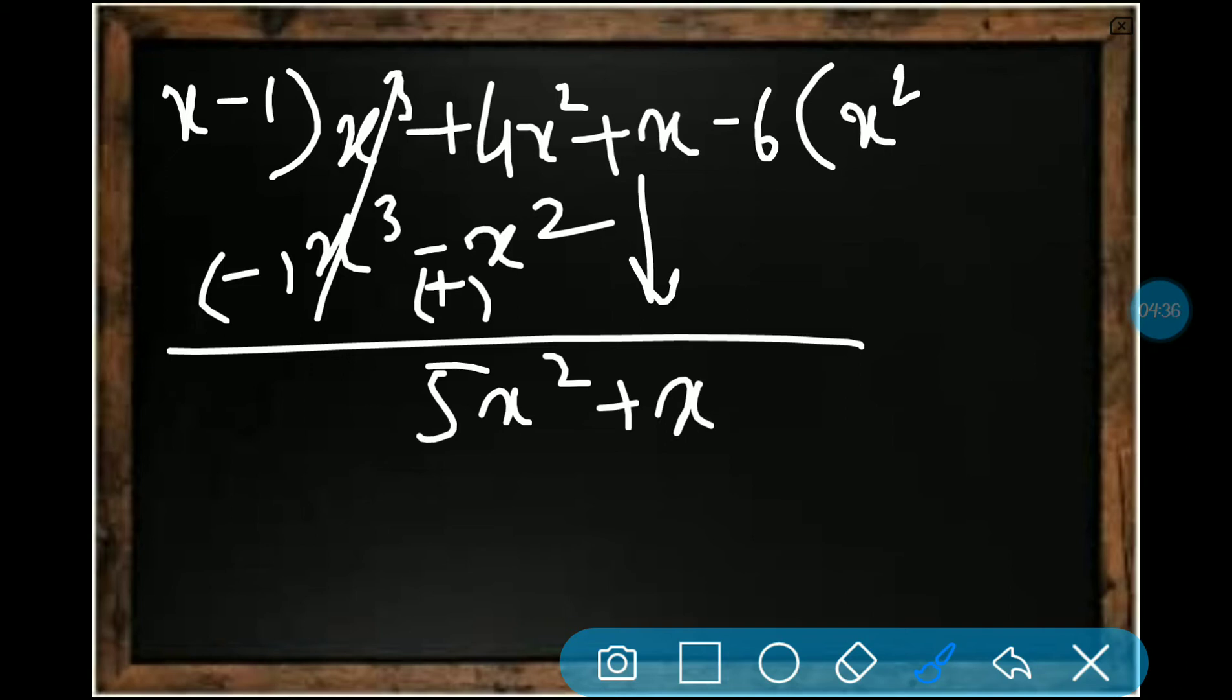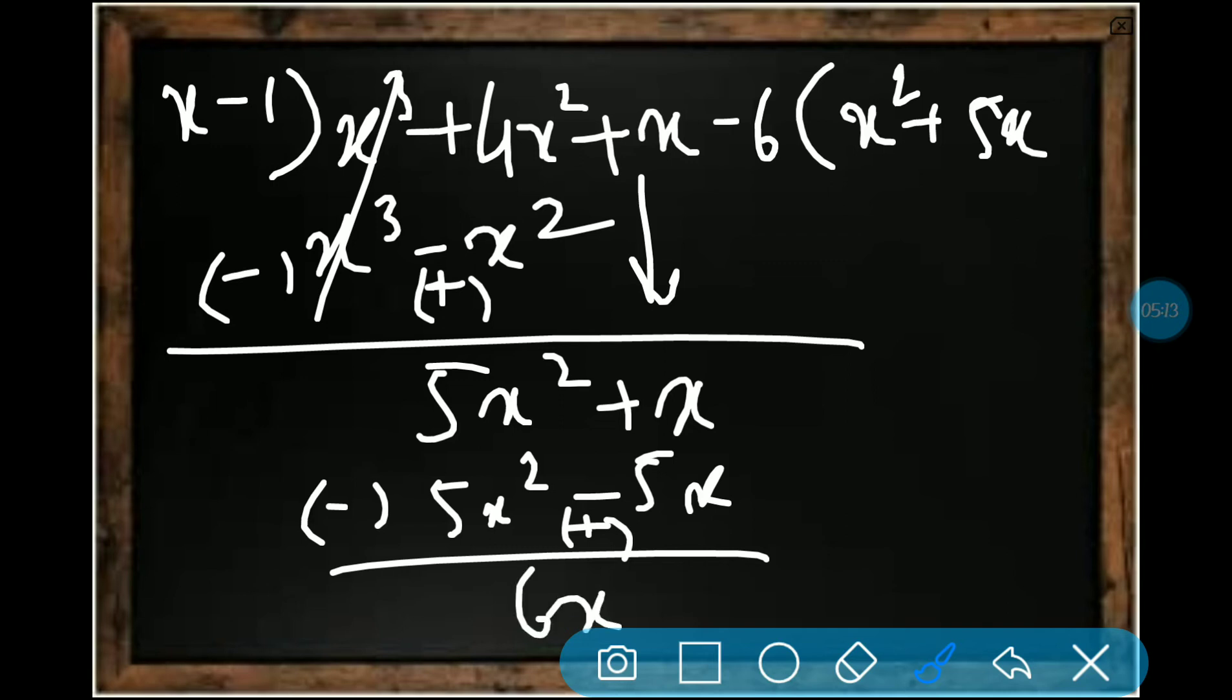Now this x again you should multiply. We have 5x², so 5x² by x, that's 5x. So 5x times we have to do multiplication. Plus 5x, so 5x², then minus 5x, same thing opposite sign. This minus into minus is plus, then this becomes 6x. Now minus 6 will come down. Until here it's possible for me to do, remaining I will do once you copy this.